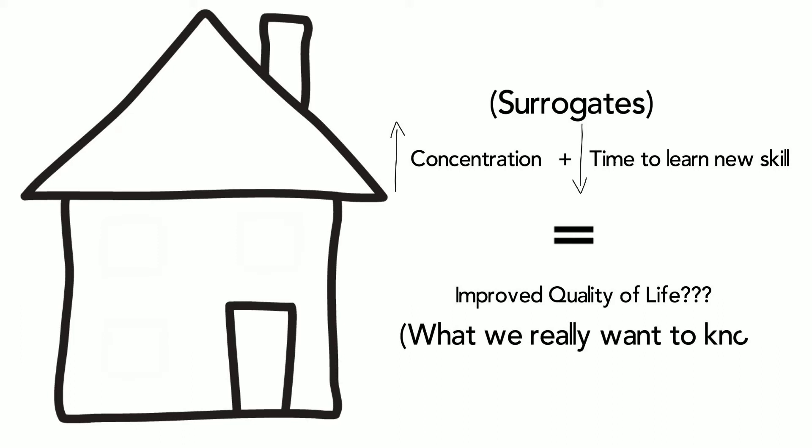But what if these sensory sensitive interventions cause more barriers and limitations to integration and access to the wider community despite improvement in these surrogate markers?